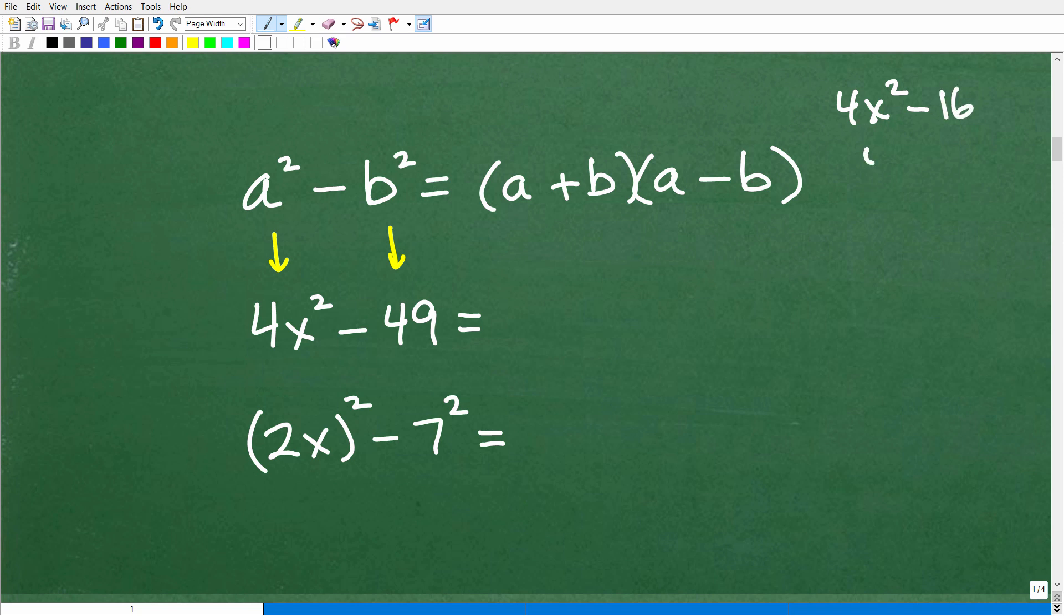So here you could factor out a 4. So that could be x squared minus 4. And that's how you would want to do that problem. You always want to get in the habit of factoring out any greatest common factors. But in this situation, you can't factor anything out.